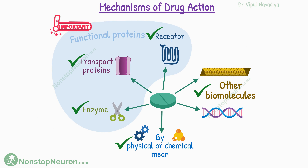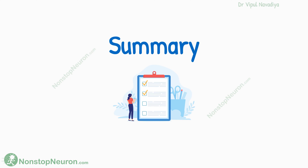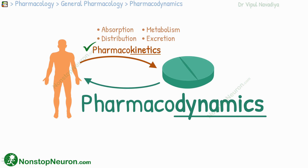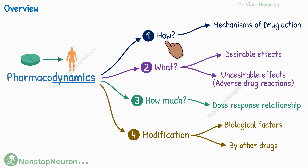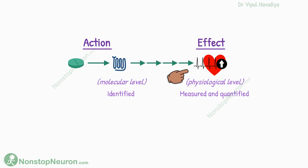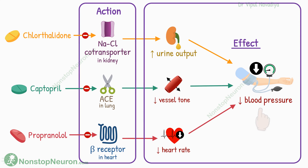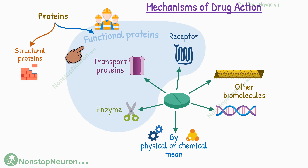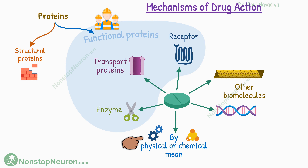So this completes everything in this lecture. Quick summary: pharmacodynamics is the study of what a drug does to the body. We learn how drugs produce their effects, what kind of effects, how much of an effect is produced, and how effects are modified. The term effect refers to the type of response produced, and action refers to how the effect is produced — action comes before the effect. The same effect may be produced by multiple actions, so knowing only the effect is not sufficient. The most common drug targets are functional proteins — enzymes, transport proteins, and receptors — but drugs may act on other biomolecules as well, and some agents act by purely physical or chemical means.